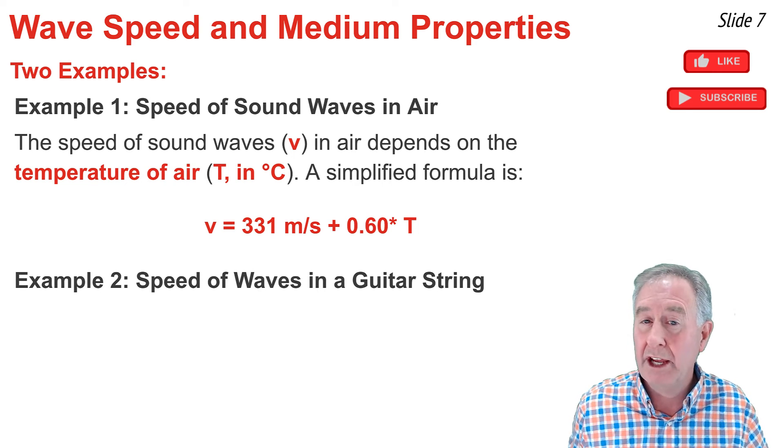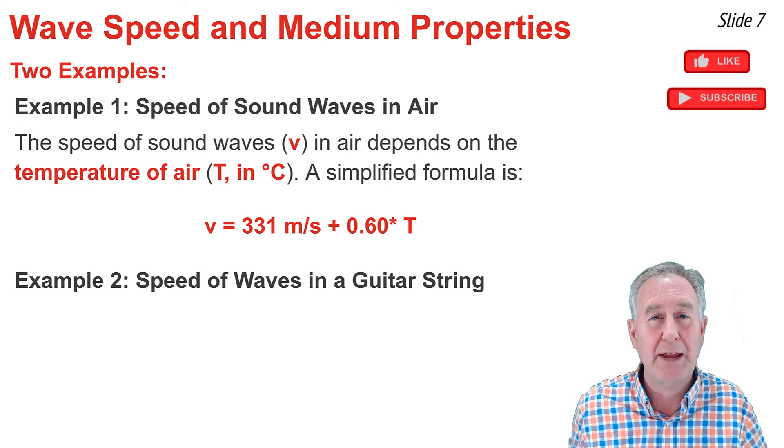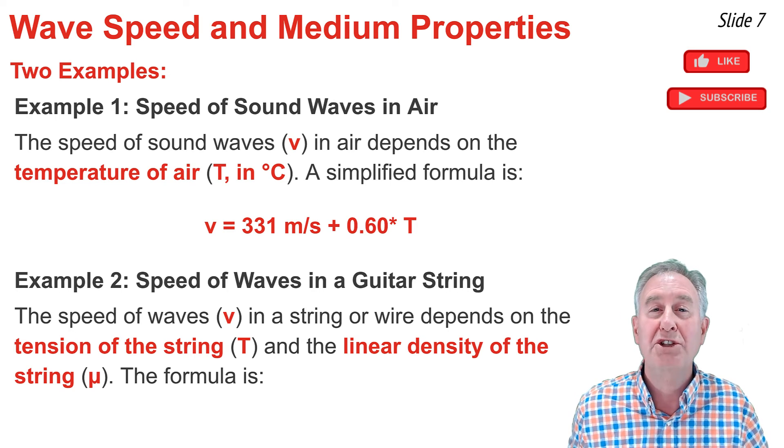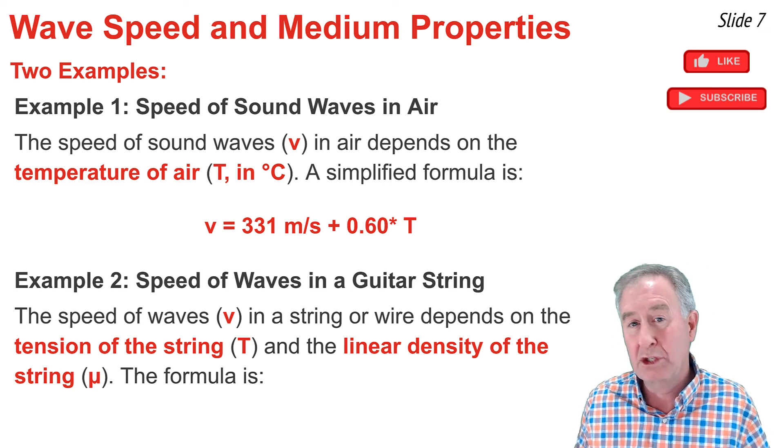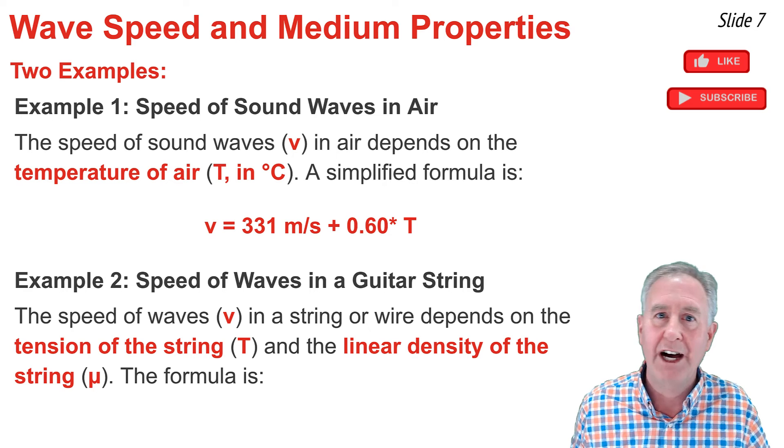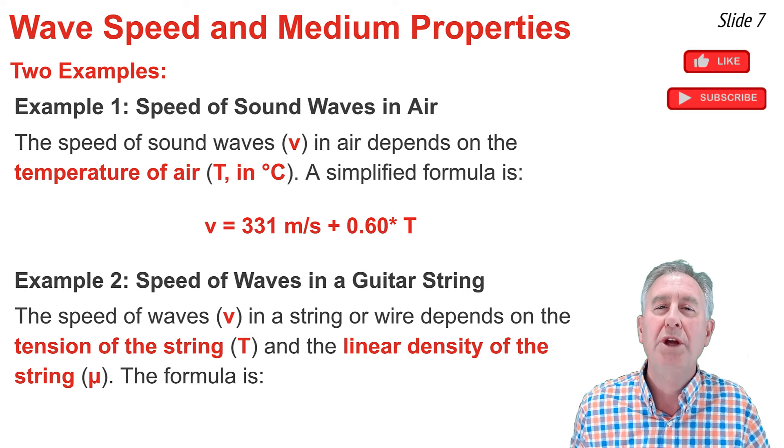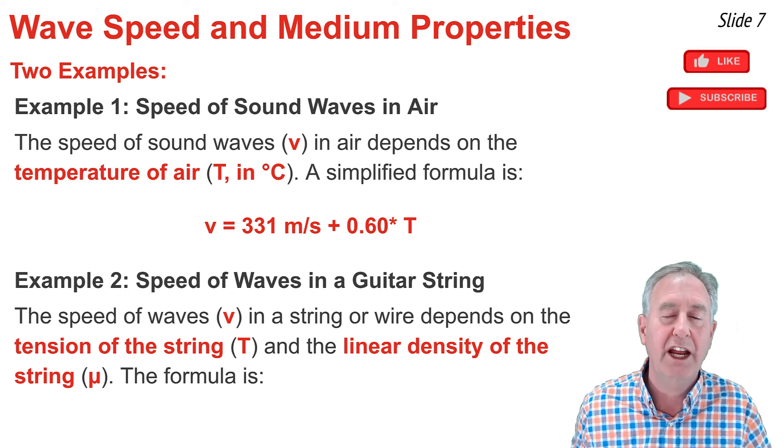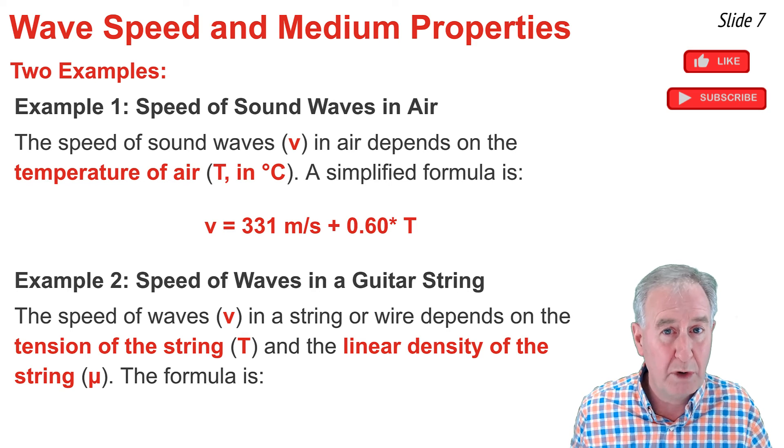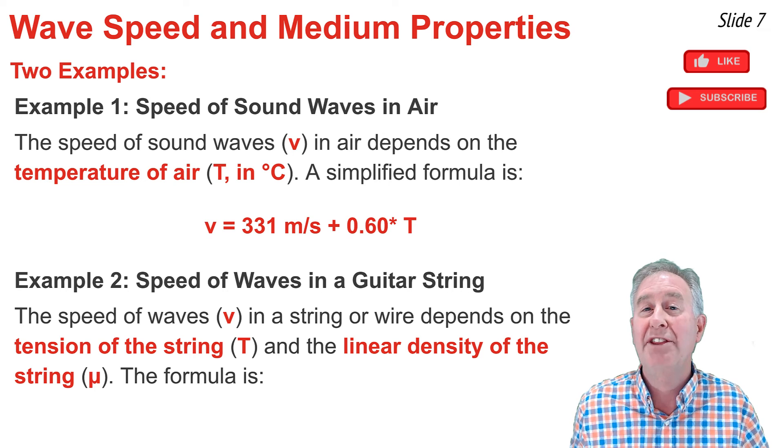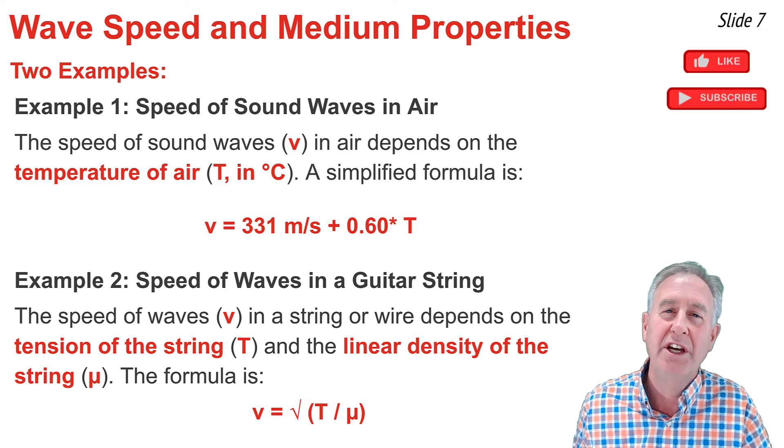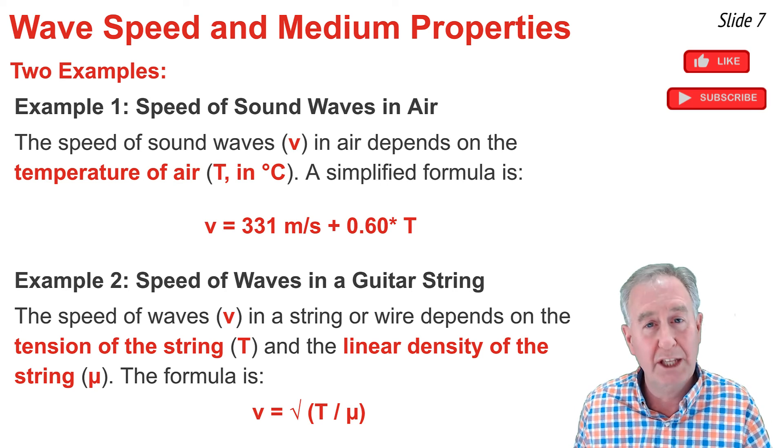The second example is the speed of waves traveling through a guitar string. It works just the same for a wire or a rope. The idea is that the speed of waves traveling through a string is dependent upon two variables the tension of the string, how tight it's pulled, and the linear density of the string. By linear density we mean something different than volumetric density, grams per milliliter, we mean the mass per unit length, the kilograms per meter length of that particular string. The formula that expresses the dependency of wave speed in a string upon the tension of the string and the linear density of the string is V equal the square root of the tension in units of newtons divided by the linear density in units of kilograms per meter.